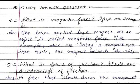For example, when we bring a magnet near iron nails, the magnet attracts the nails. Whenever we bring a magnet close to iron nails, the magnet attracts the nails towards itself. This is magnetic force.